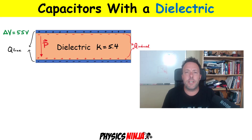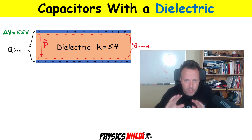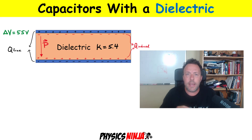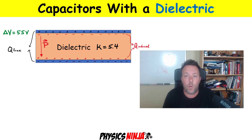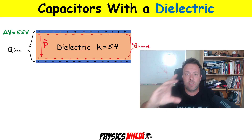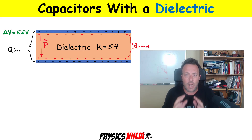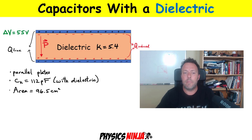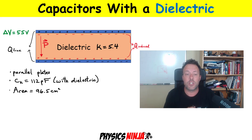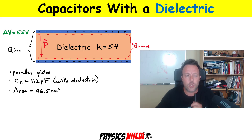Hey everybody, Physics Ninja here. I've got another problem dealing with capacitors with dielectrics. So here's the problem: I have a capacitor with a dielectric that has a constant k equals 5.4. It's held at a potential difference, so the voltage between the plates is 55 volts, and that remains constant. This is a parallel plate capacitor. The capacitance is 112 picofarads — that's with the dielectric inserted — and the area of the plates is 96.5 centimeters squared.